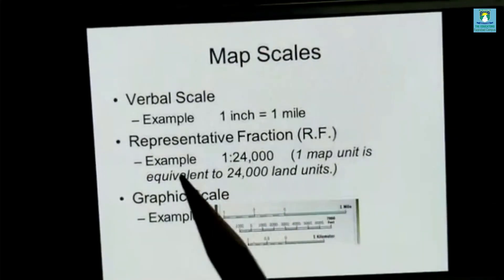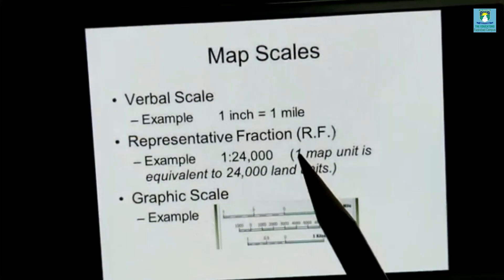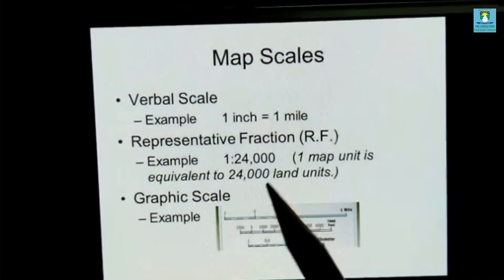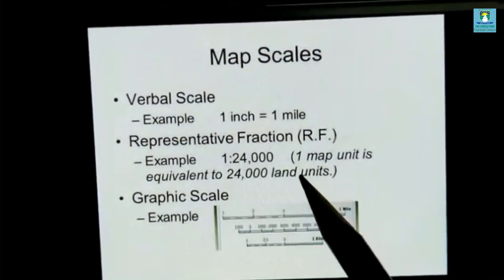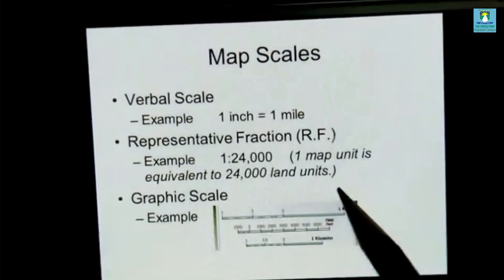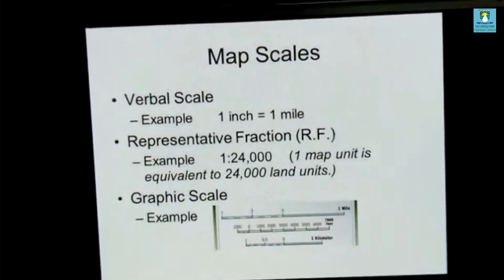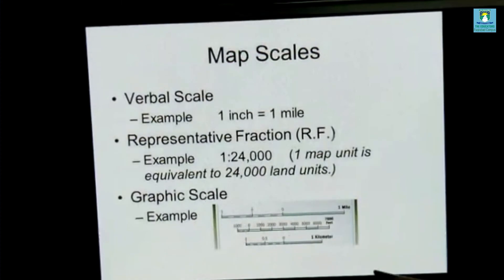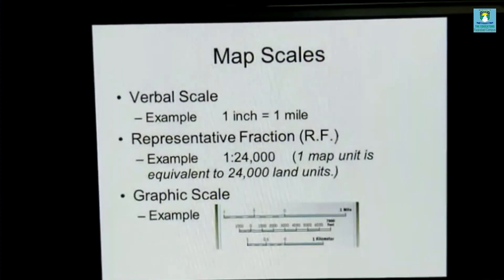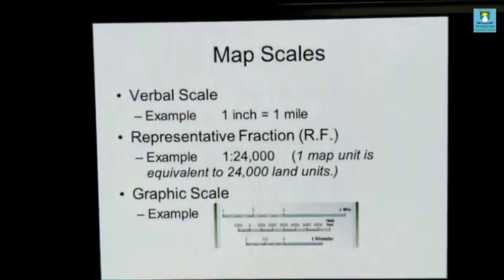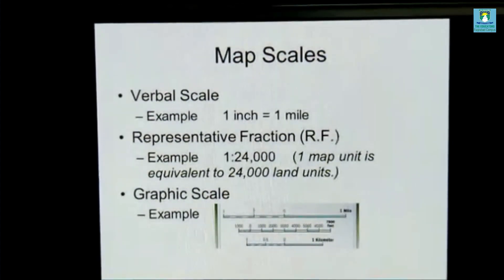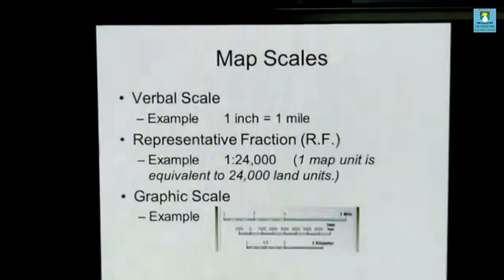So in this example: the verbal scale is 1 inch equals 1 mile on the ground; the fractional scale is 1:24,000, meaning 1 unit equals 24,000 land units; and the graphic scale shows distance in kilometers and miles. I think this is clear to you. That is the three types of scales we have studied today. Thank you so much my dear students, Allah Hafiz.